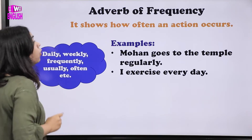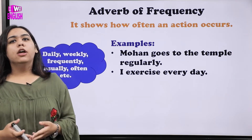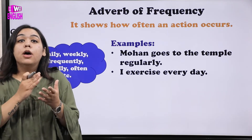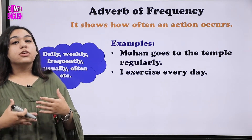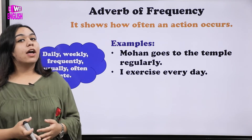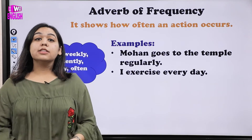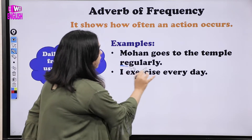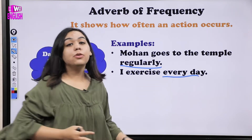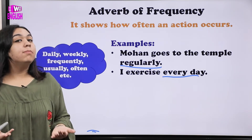The next type is adverb of frequency, which tells us how frequently an action is taking place. For example: 'I go for swimming regularly' — 'regularly' is the frequency of the action. Examples include: usually, regularly, daily, weekly, monthly. Sentences: 'Mohan goes to the temple regularly' — regularly is the adverb of frequency. 'I exercise every day' — 'every day' tells us how frequently the action takes place.